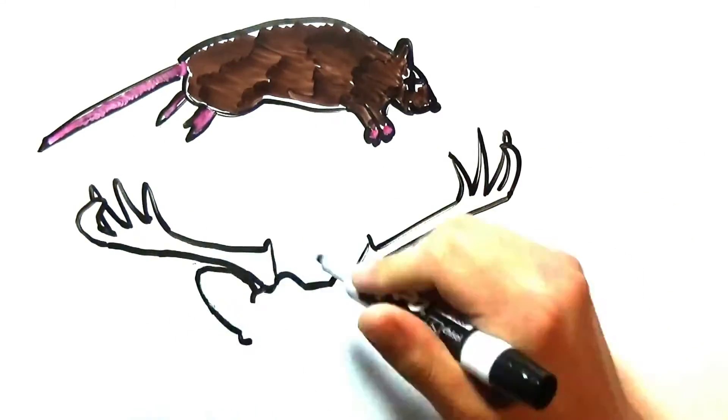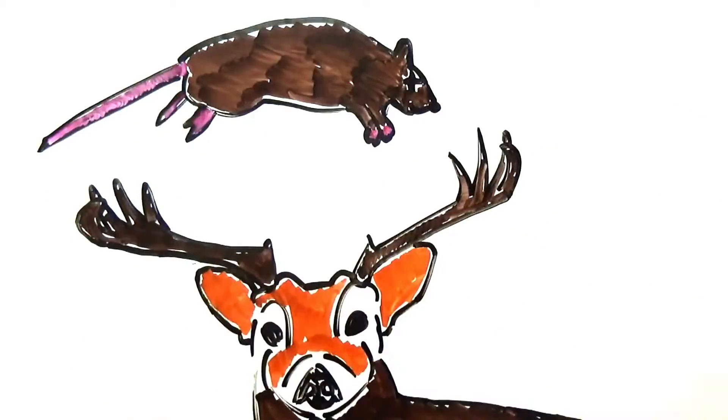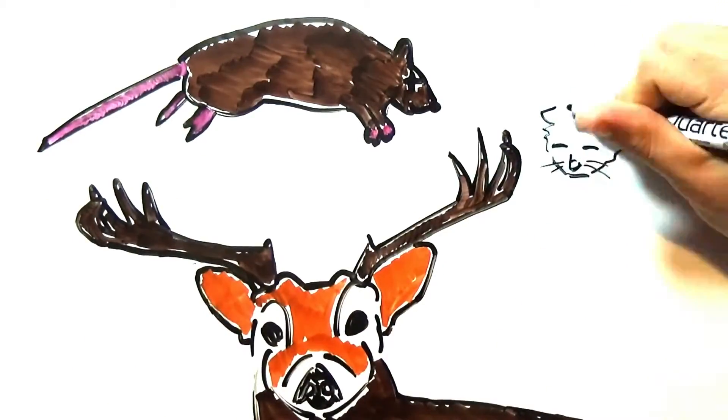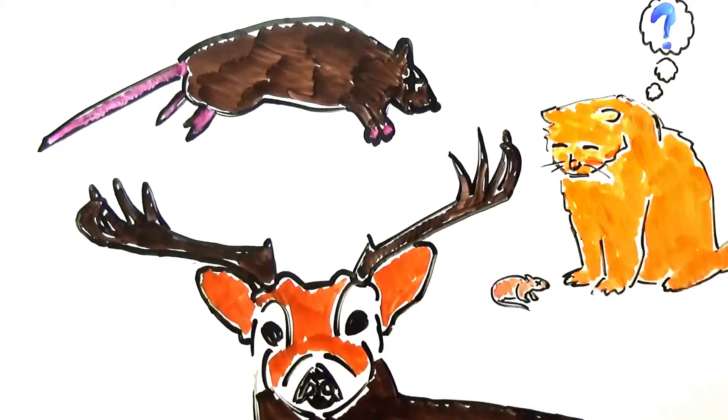A deer in the headlights cannot move immediately since it experiences this same phenomenon, and the consensus among scientists is that it is a last resort when faced with an overwhelming predator as many predators would not want to eat something appearing dead.